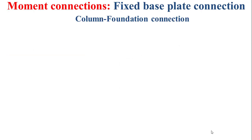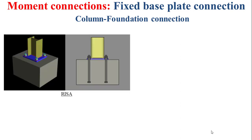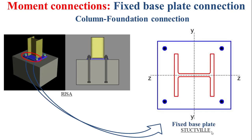Now I'll introduce the moment connection between the column and the foundation, called the fixed base plate connection. As depicted in the figure, we have a column depicted in yellow connected to the foundation using an end plate depicted in blue as the connecting element. The column is welded by its flanges and its web to the end plate, and the end plate is bolted to the foundation. Note that the bolts are placed in the neighborhood of the flanges, not the web, so rotation is not allowed and this fixed base plate connection is able to carry the bending moment.